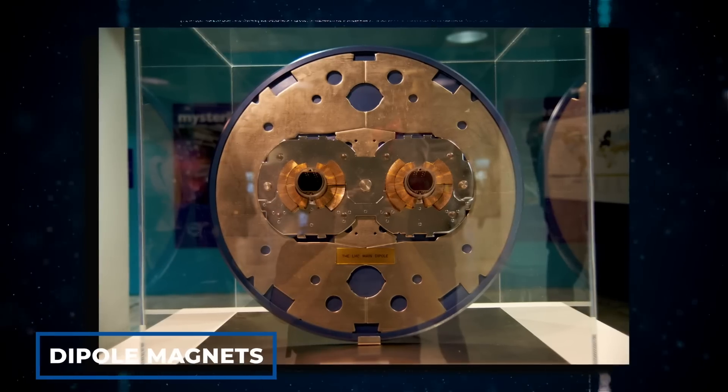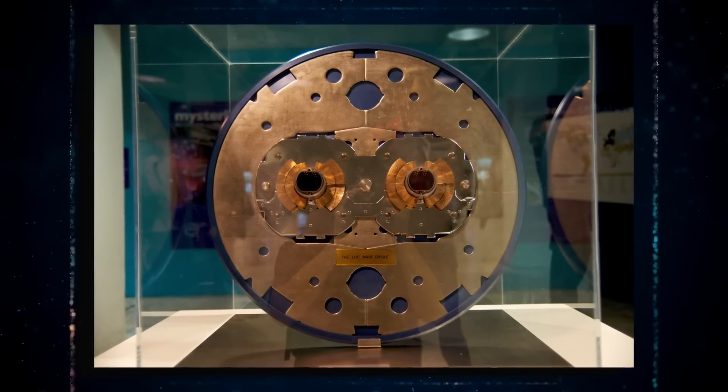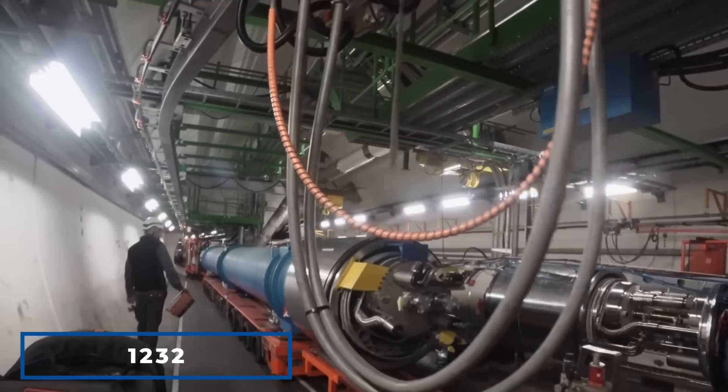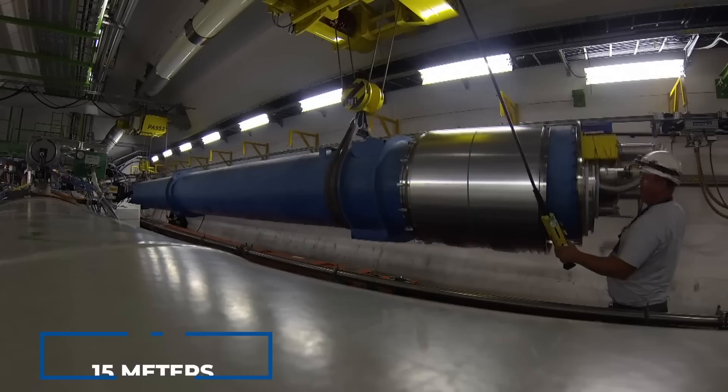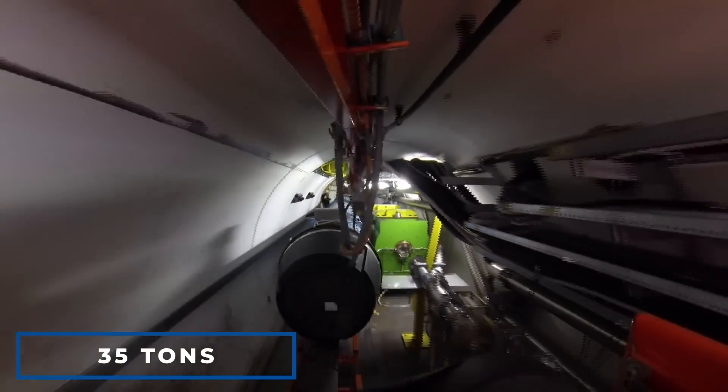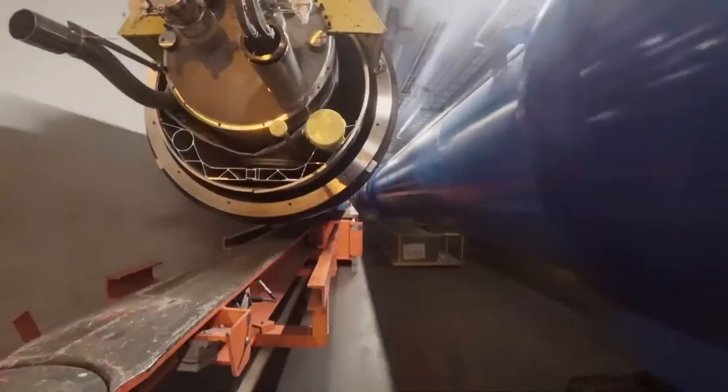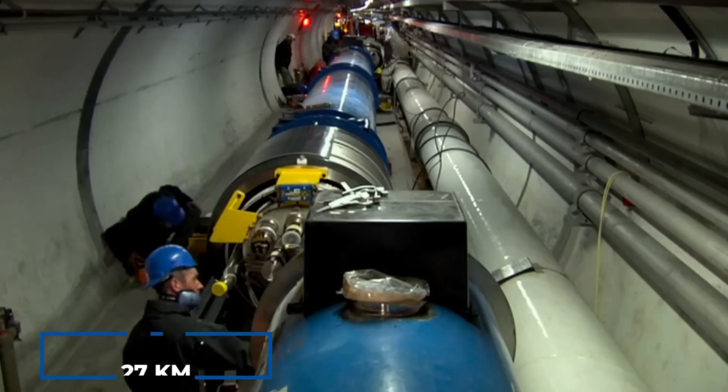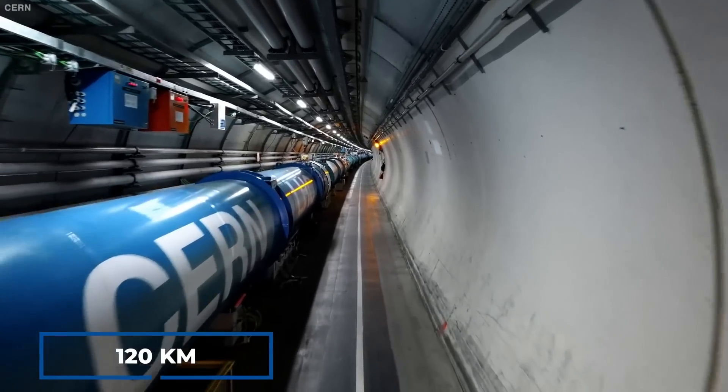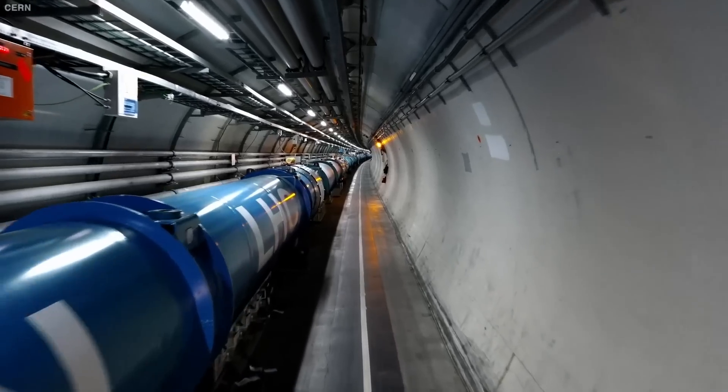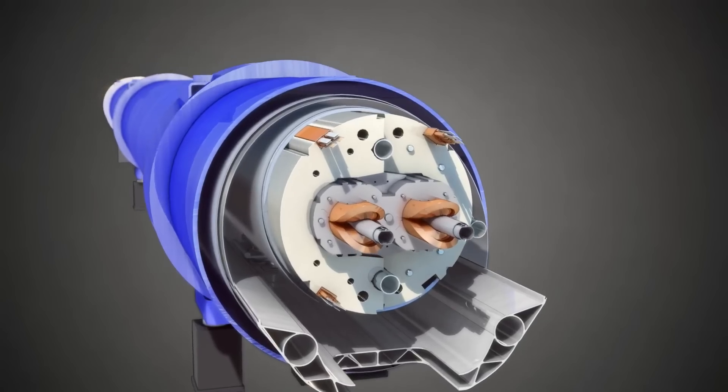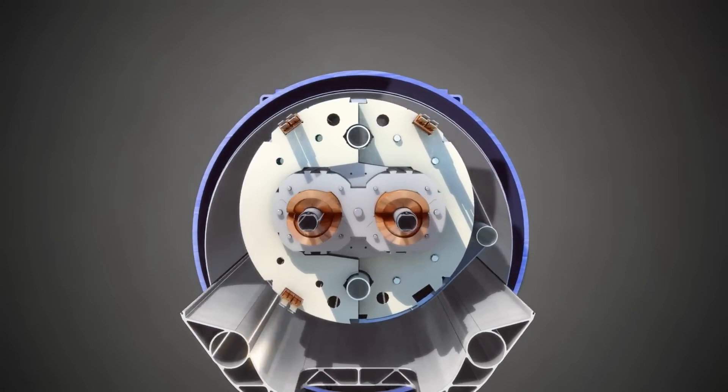Dipole magnets, one of the most complex components of the LHC, are used to bend the particle paths. There are 1,232 main dipoles, each 15 meters long and weighing 35 tons. If ordinary magnets were used instead of superconducting magnets in the 27 kilometer long LHC, the accelerator would have to be 120 kilometers long to achieve the same energy. The dipole magnets' powerful magnetic fields enable the beam to handle tighter turns.